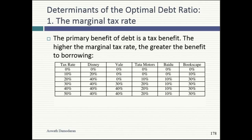Companies might still borrow at zero tax benefit if they have constraints on raising equity or because equity markets are not developed. When I was in Dubai, I asked groups to do the optimal capital structure for 10 Middle Eastern companies. Every group came back and said none of these companies should be borrowing money — but they all do. One by one the reasons came out: this company is run by a family that will not issue equity; this company is in Oman and capital markets aren't developed; this company is private with no access to equity capital. If you're borrowing money, be clear about why — it's not making you more valuable.